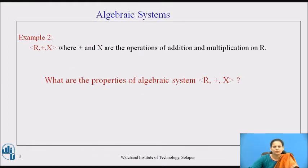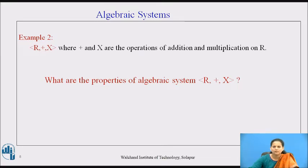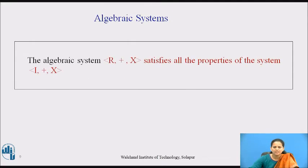Here is the next example. The algebraic system (R, +, ×), where + and × are the operations of addition and multiplication on R and R is the set of real numbers. Pause the video for a while and try to answer: what are the properties of the algebraic system (R, +, ×)? The algebraic system (R, +, ×) also satisfies all the properties of the system (I, +, ×).